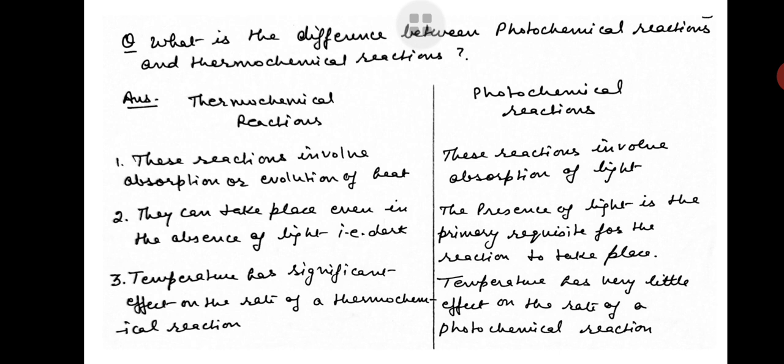Now next question is: what is the difference between photochemical reactions and thermochemical reactions? Thermochemical reactions involve absorption or evolution of heat. Photochemical reactions involve absorption of light. Thermochemical reactions can take place even in the absence of light, that is dark. The presence of light is the primary requisite for the reaction to take place in photochemical reactions.